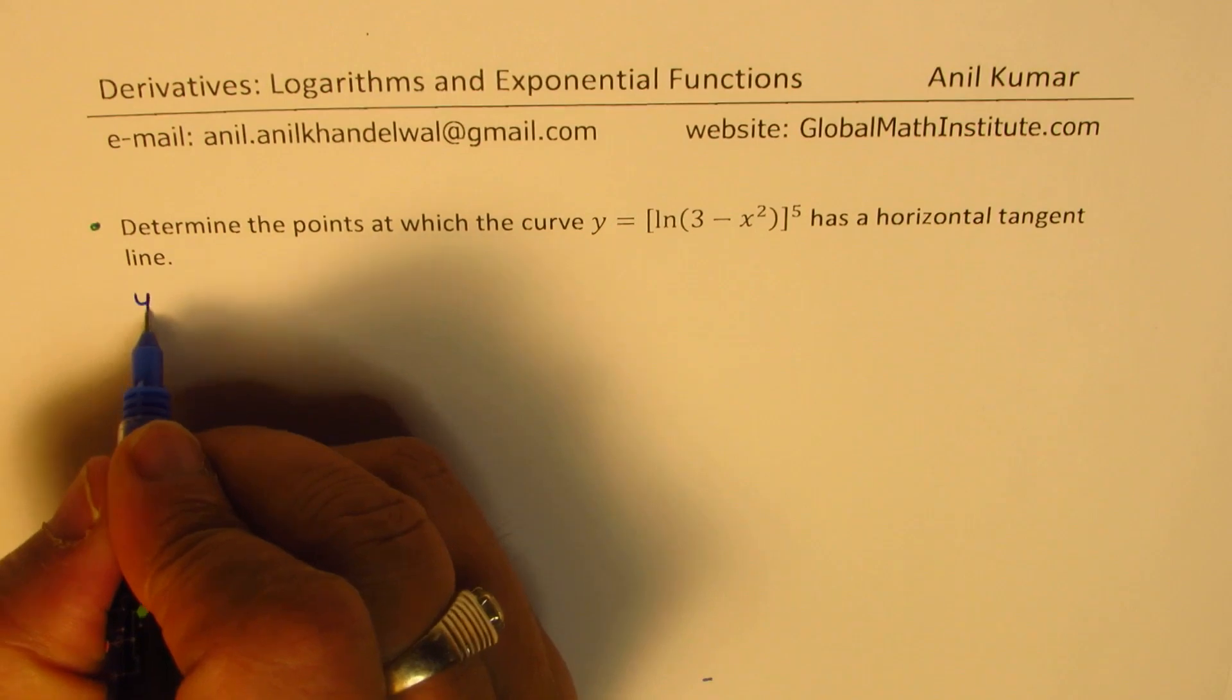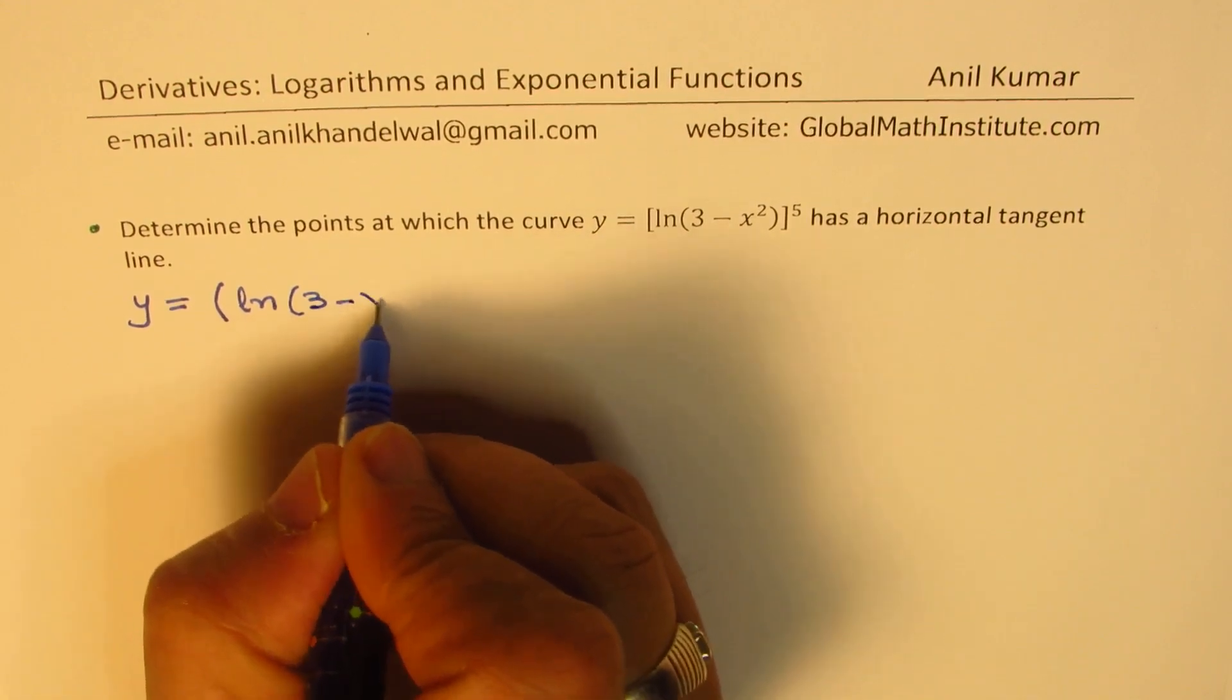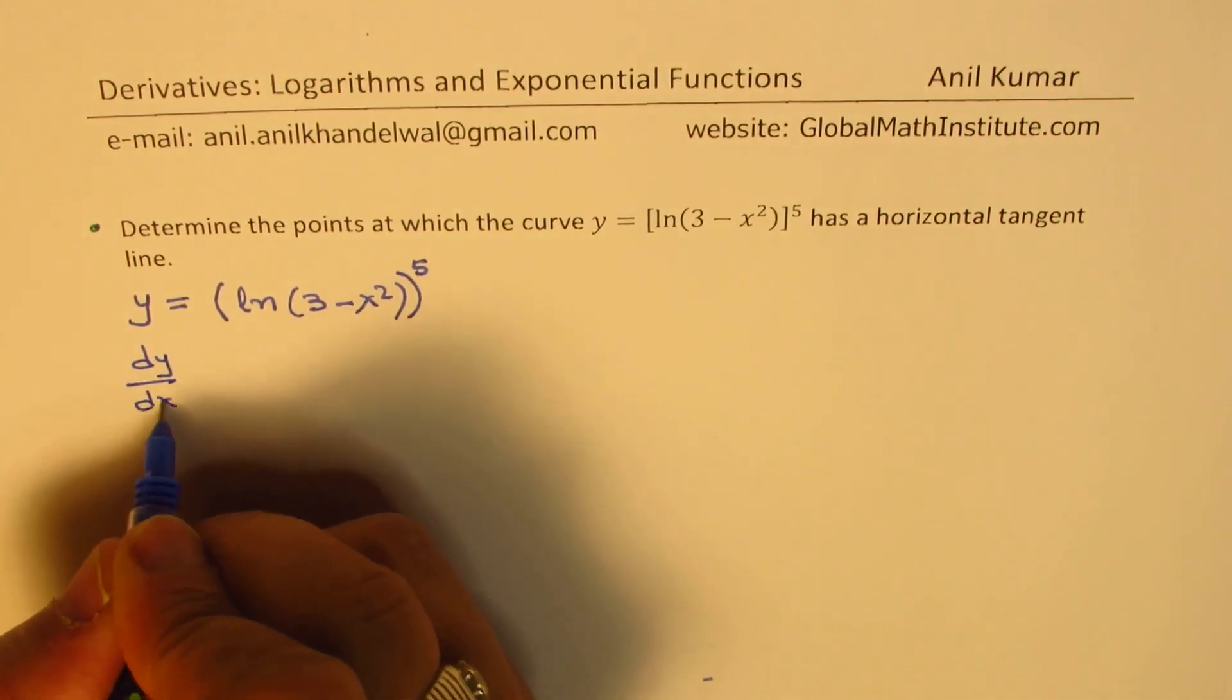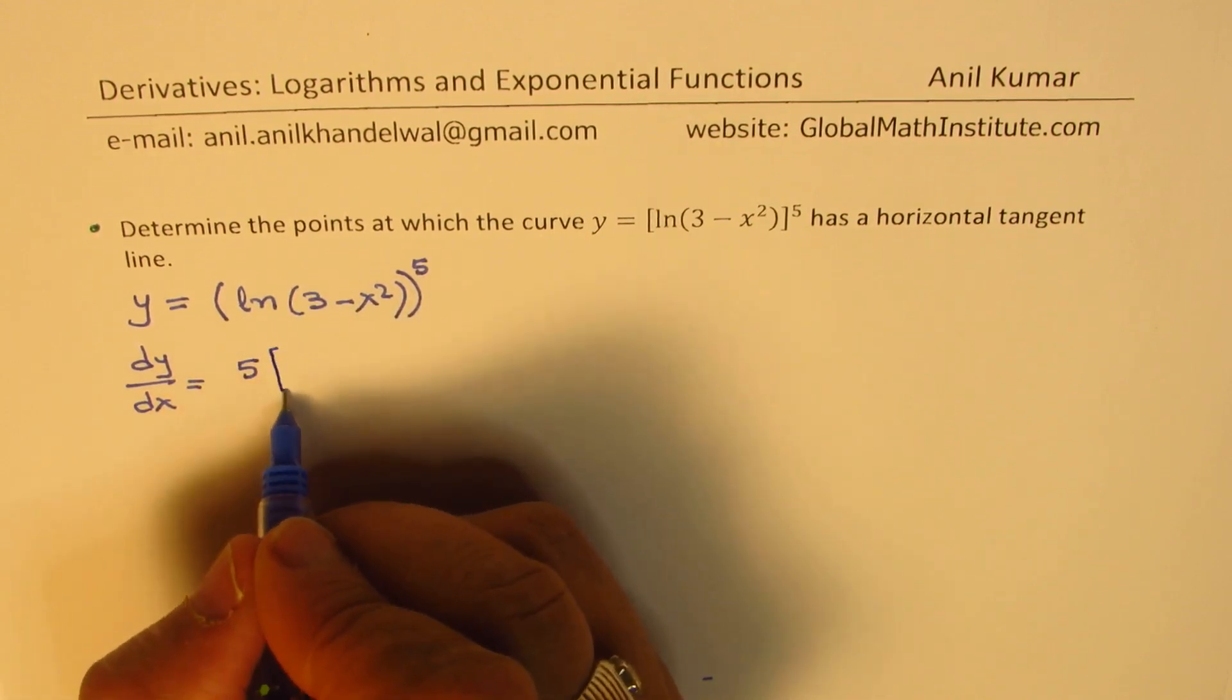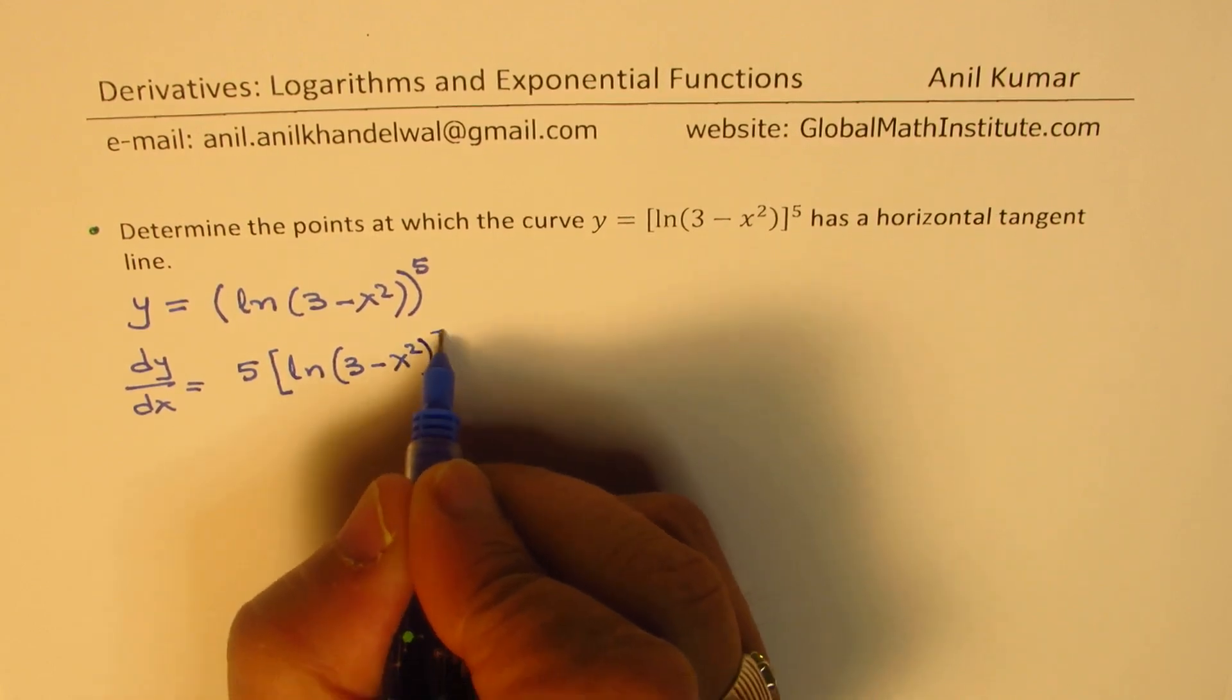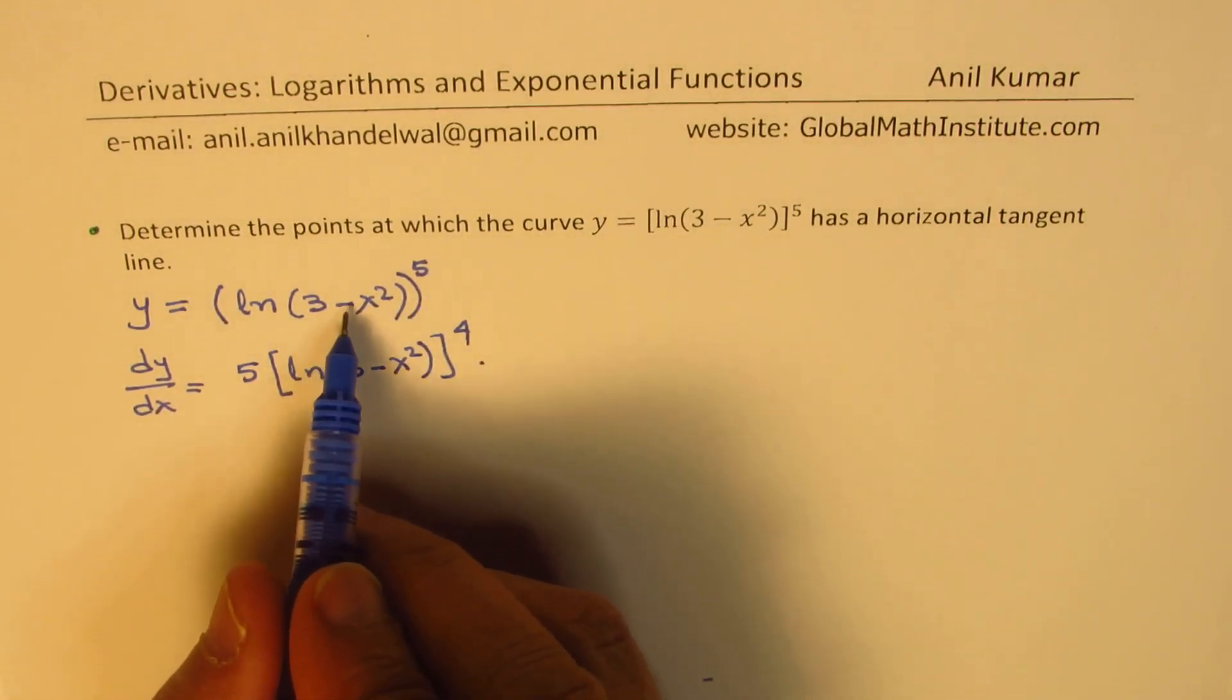We're given the function y equals the 5th power of ln of 3 minus x squared. So dy dx is equal to 5 times ln of 3 minus x squared to the power of 4, times the derivative of the inside function, which is minus 2x.